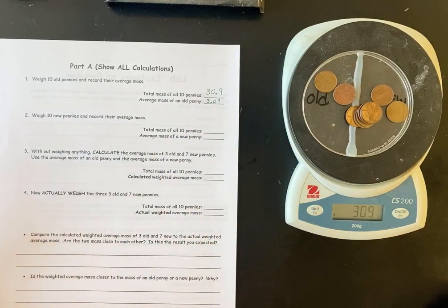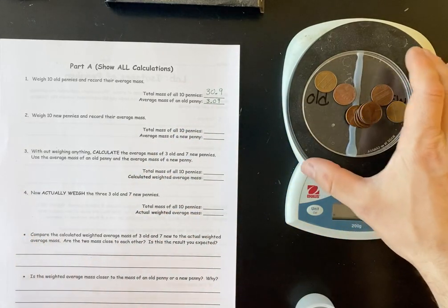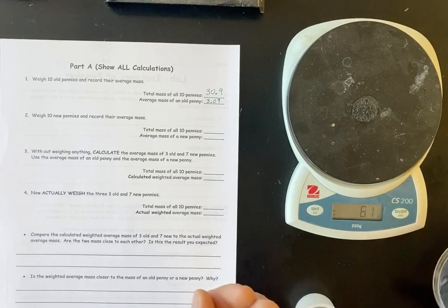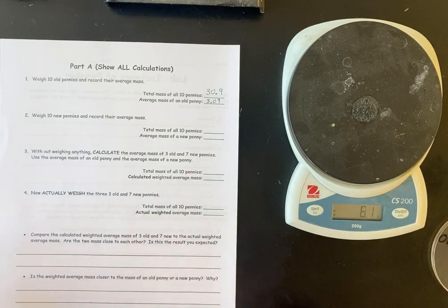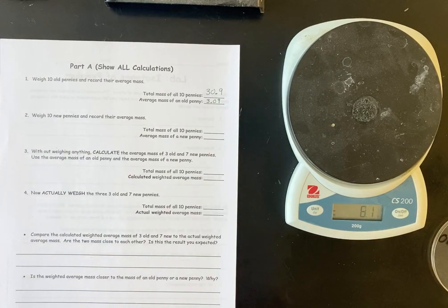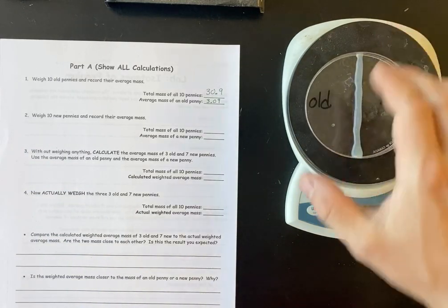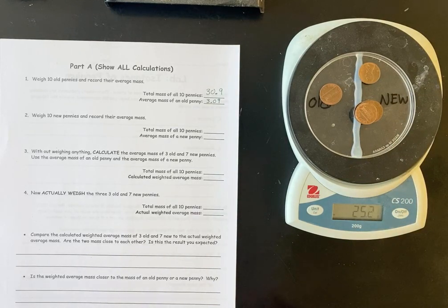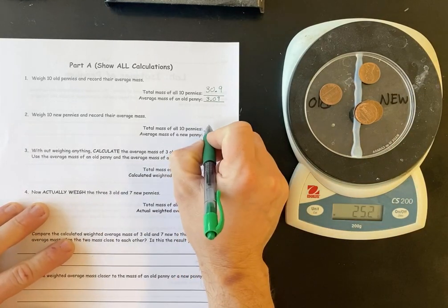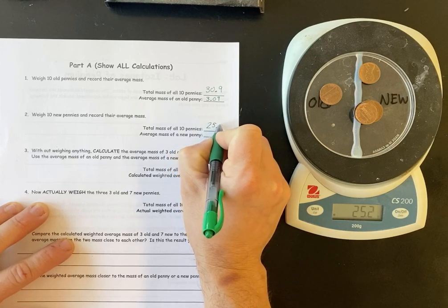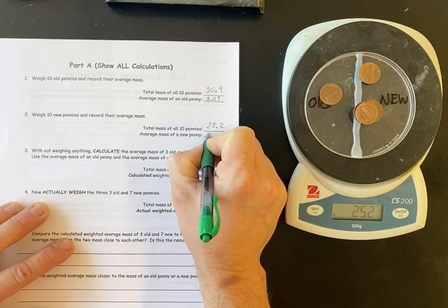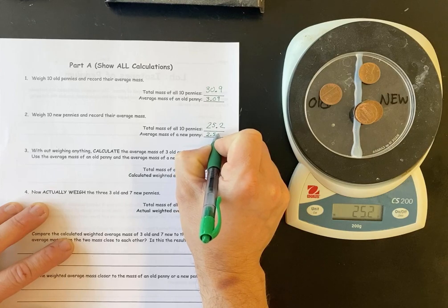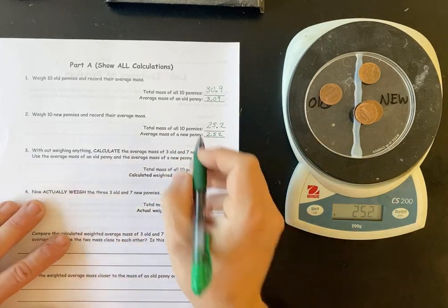All right. Then we put them back. Now, the next thing you're going to do is you're going to do the same thing, but with 10 new. So it's zeroed out already. I counted already that there were 10. We weigh our 10 new, and we get 25.2. Divide that by 10, 2.52. So, and then these are grams.